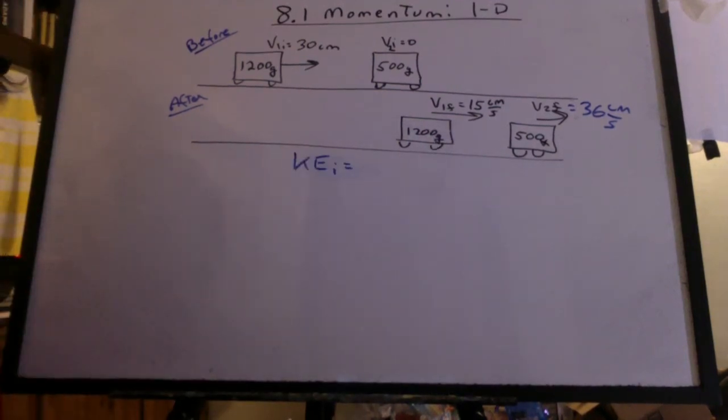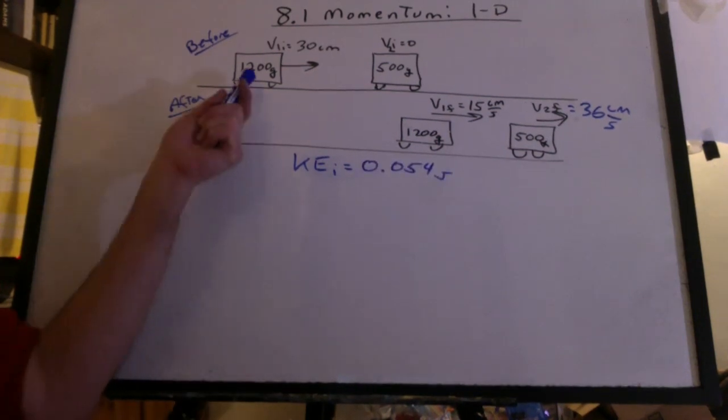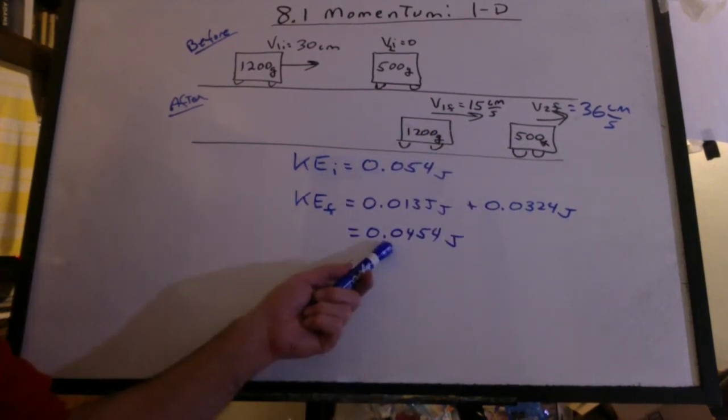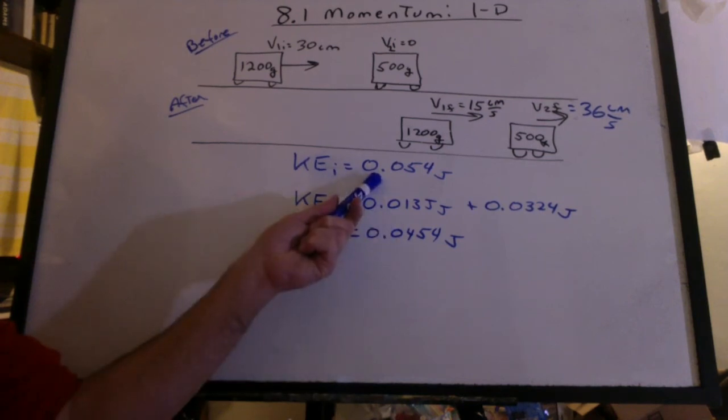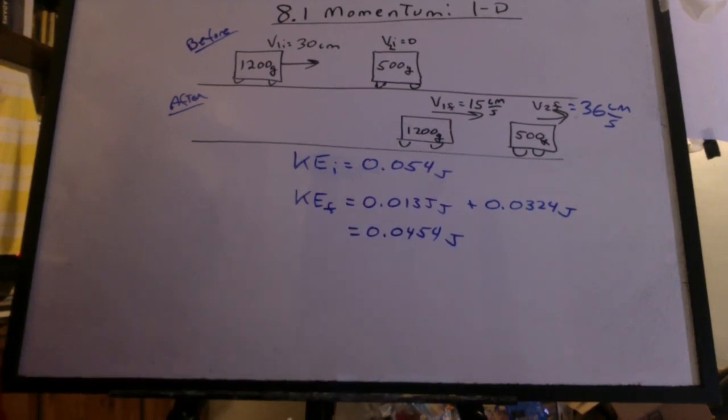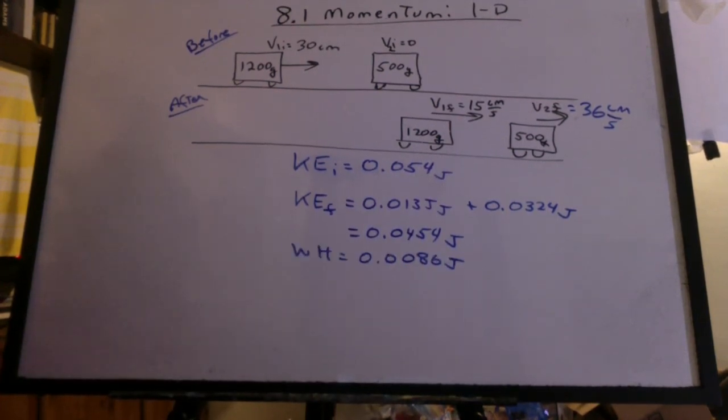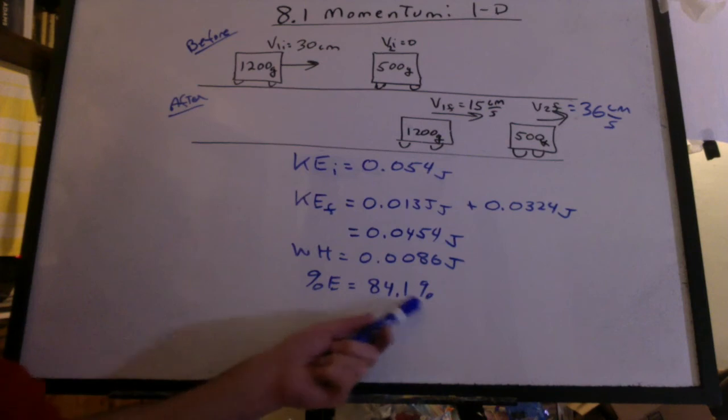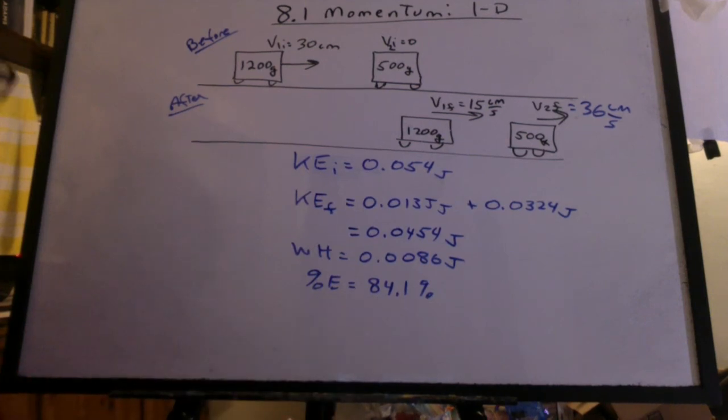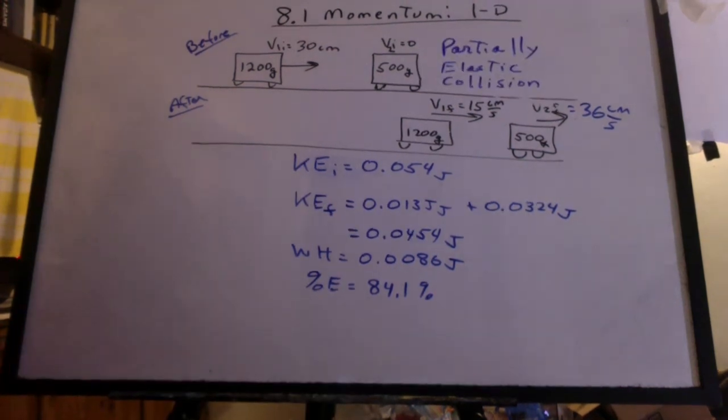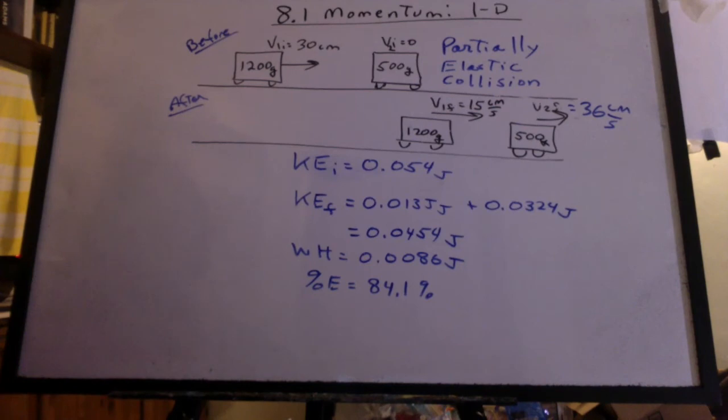But now let's check out the kinetic energy. We get 0.054 joules for the initial. Here's my kinetic energies for the carts after. Well, it looks like the kinetic energy final is a little less than the kinetic energy initial. How come? No spring, folks. We lost a little energy. 0.0086 joules of waste heat. Taking the final energy, dividing by the initial, we get about 84% efficient collision. So it's not a spring, but it's not bad either. It's pretty elastic. So they didn't stick, so we call it a partially elastic collision.